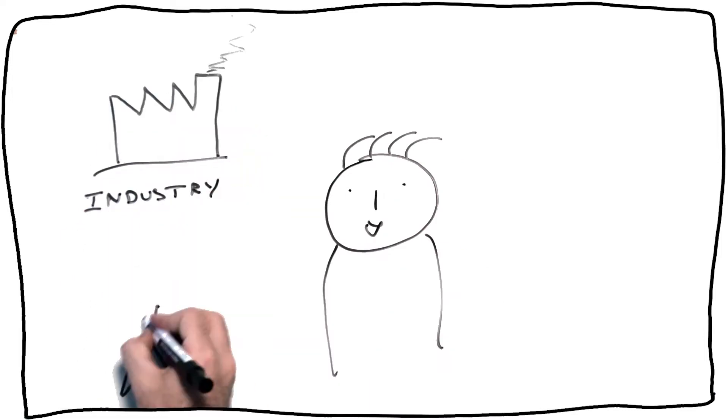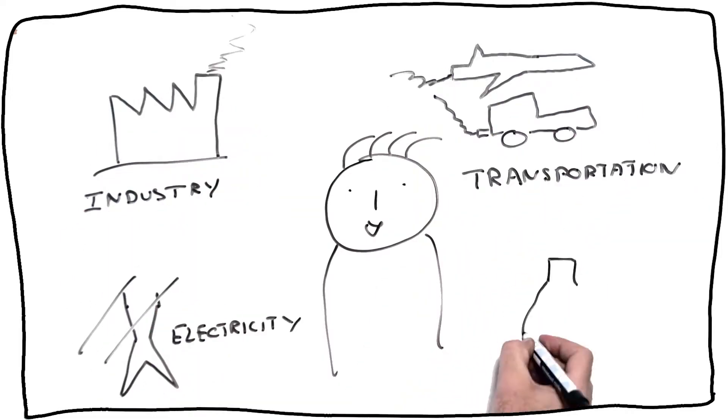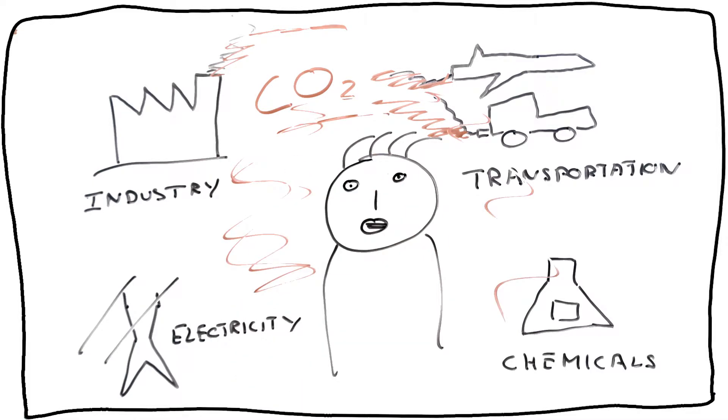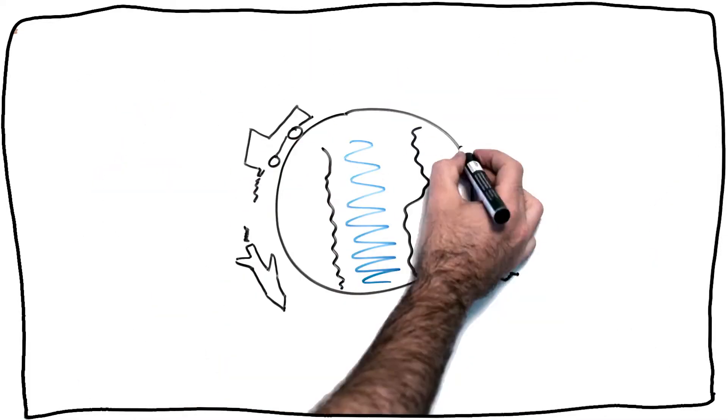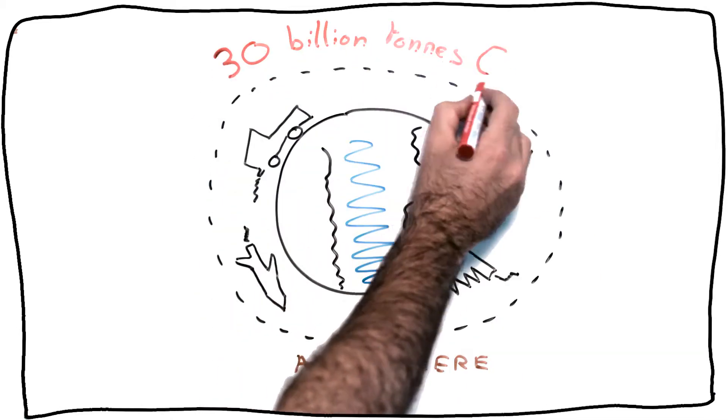Coal and oil are the main sources of energy and chemicals, but the smoke released by burning fossil fuels creates air pollution. 30 billion tons of carbon dioxide are released into the atmosphere each year.